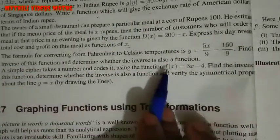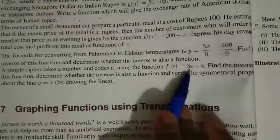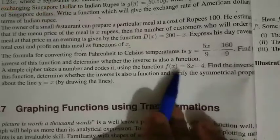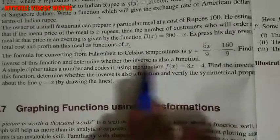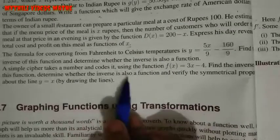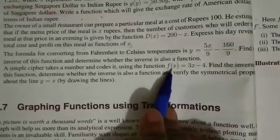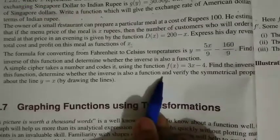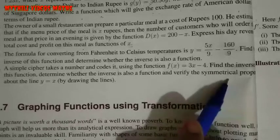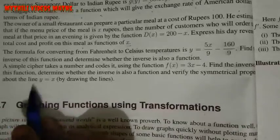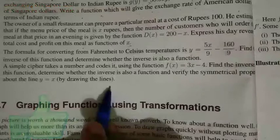So the inverse we need to find. We let f(x) = y, and then find what y's inverse will be — that is f inverse of x. Same like the previous problem. So determine whether the inverse is also a function. And verify the symmetrical property about the line y = x by drawing the lines.